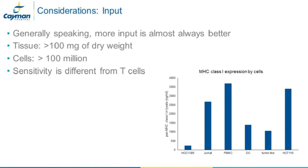The first step along the immunopeptidome profiling workflow is input material. The big question is always how much material is needed—and the best answer is more is always better. MHC concentration in lysates from various cell lines can show a tenfold range of expression in the same number of cells. We frequently recommend starting with at least 100 million cells or 100 milligrams of dried tumor weight, but in some cases this won't be enough to get a complete picture of the immunopeptidome.